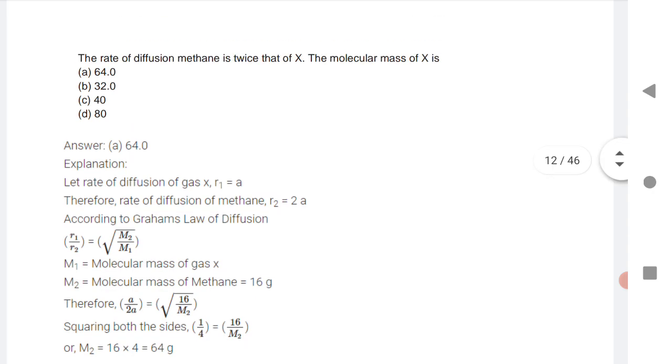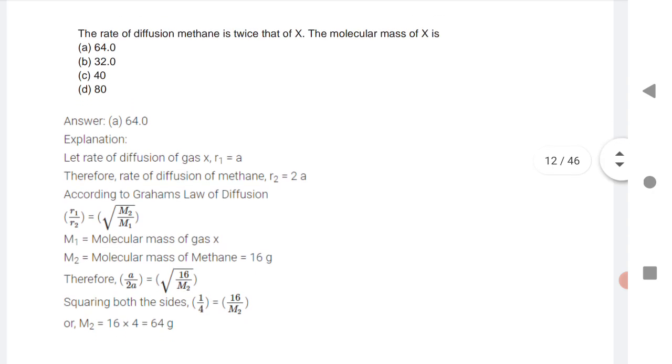So here the rate of diffusion of methane is twice that of X. So we need to find out the molar mass of X. You need to find out what is M2.